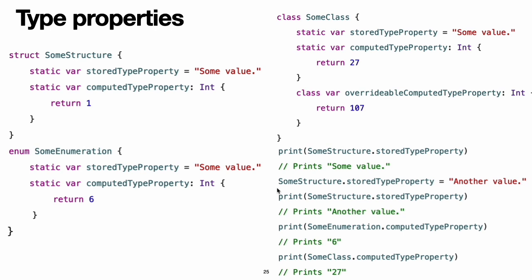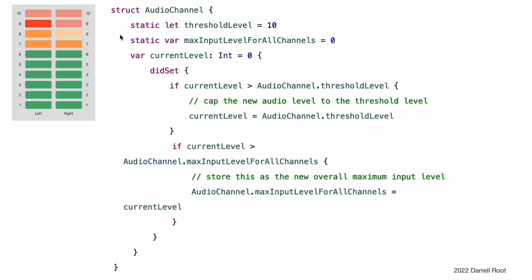Querying and setting type properties: type properties are queried and set with dot syntax, just like instance properties. However, type properties are queried and set on the type, not on the instance of the type. This example uses two stored type properties as part of a structure that models an audio level meter for a number of audio channels. Each channel has an integer audio level between 0 and 10 inclusive. This figure illustrates how two of these audio channels can be combined to model a stereo audio level meter.